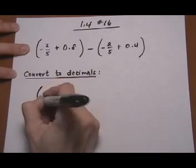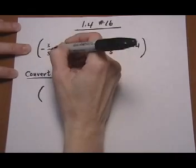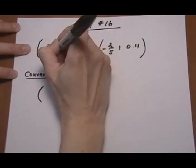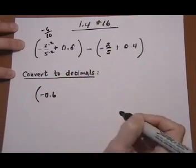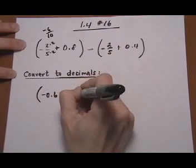Negative 3 over 5. We can multiply times 2 times 2 and get minus 6 tenths, which is minus 0.6 plus 0.8.